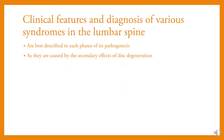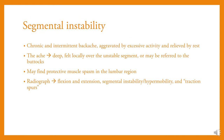Clinical features and diagnosis of various syndromes in the lumbar spine are best described according to each phase of pathogenesis, as they are caused by secondary effects of disc degeneration. Segmental instability presents as chronic and intermittent backache, aggravated by excessive activity and relieved by rest. The ache is felt locally over the unstable segment or may be referred to the buttocks, with protective muscle spasm in the lumbar region. Radiograph shows flexion and extension segmental instability or hypermobility and traction spurs.